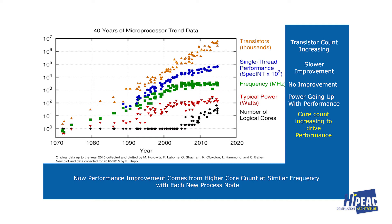Here's a graph put together by Mark Horowitz and his students at Stanford. The transistor count increased steadily, but single-thread performance started to flatten somewhere around 2004–2005. Frequency also flattened, power kept up very slowly on this log scale, and the number of cores went up.